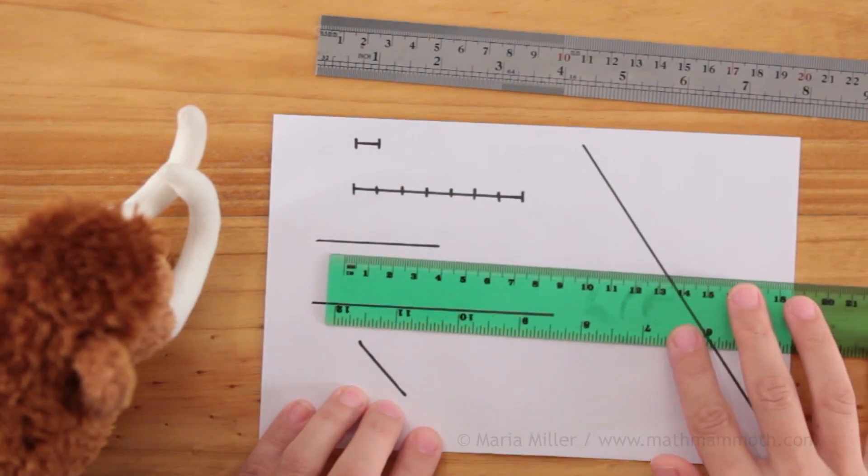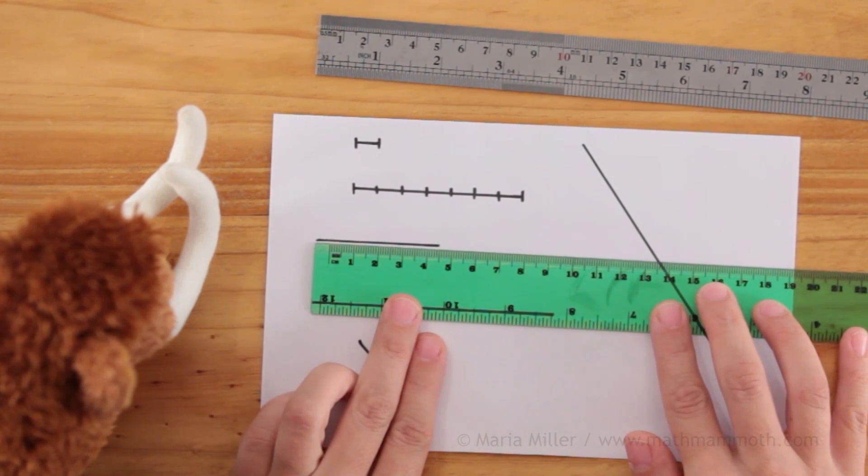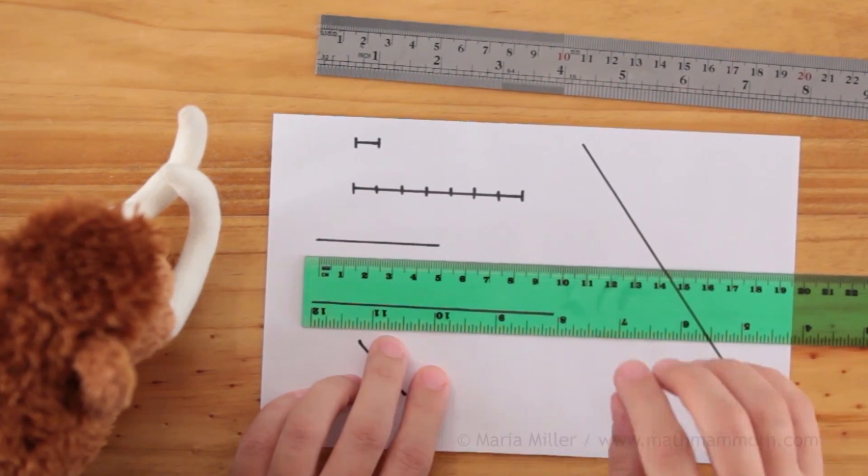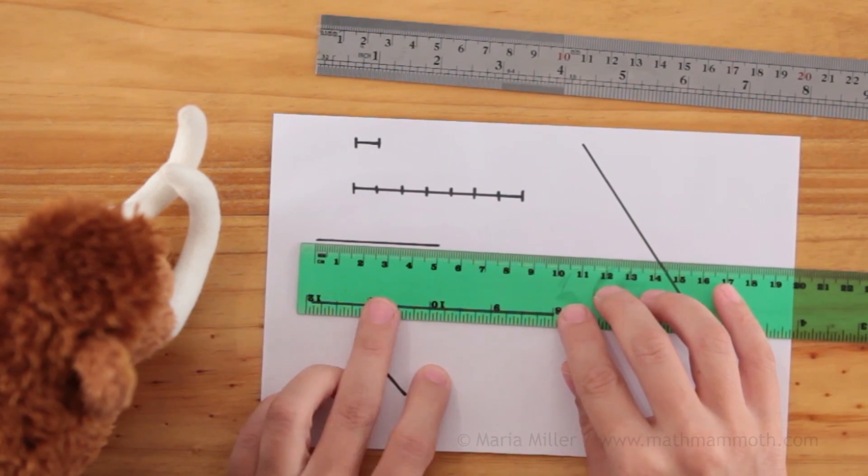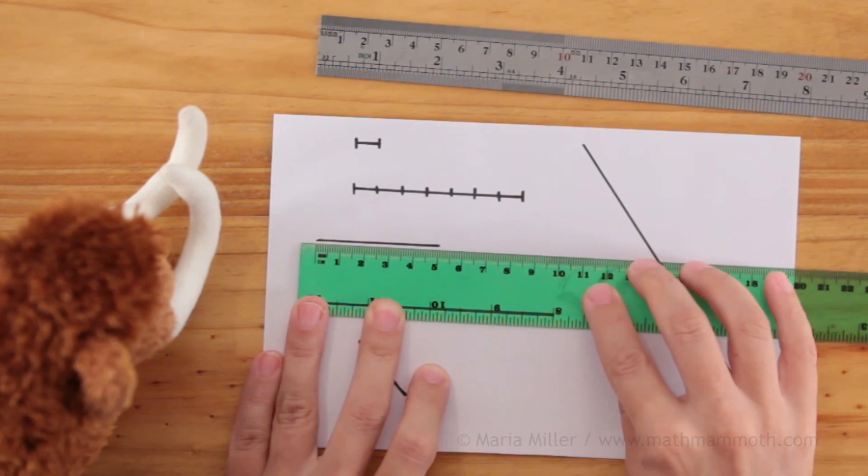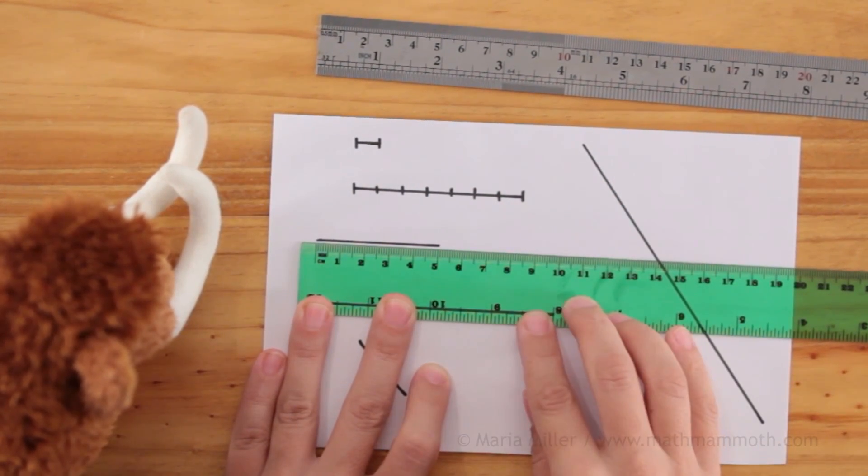With this other, I cannot line up the end of the ruler with my line. Because in this ruler, the zero point for the centimeters is at this mark here. So this is my zero centimeters. I have to line up my line with that. And then at the end of the line, I see it is five centimeters long.